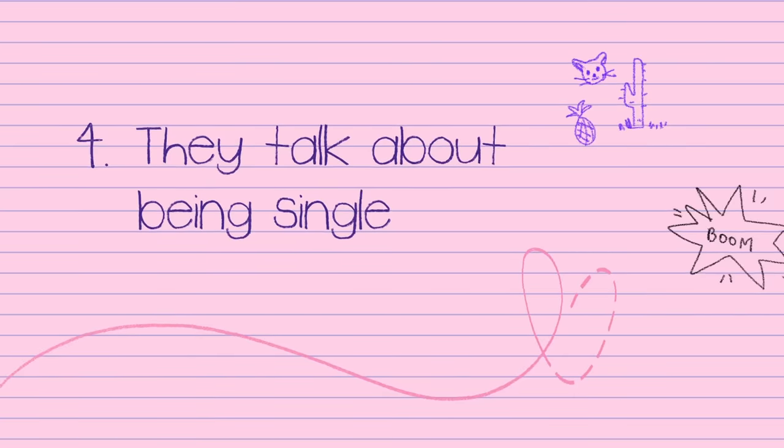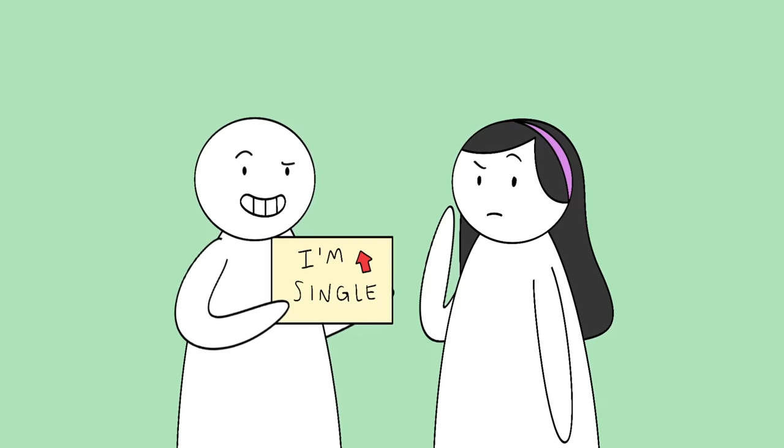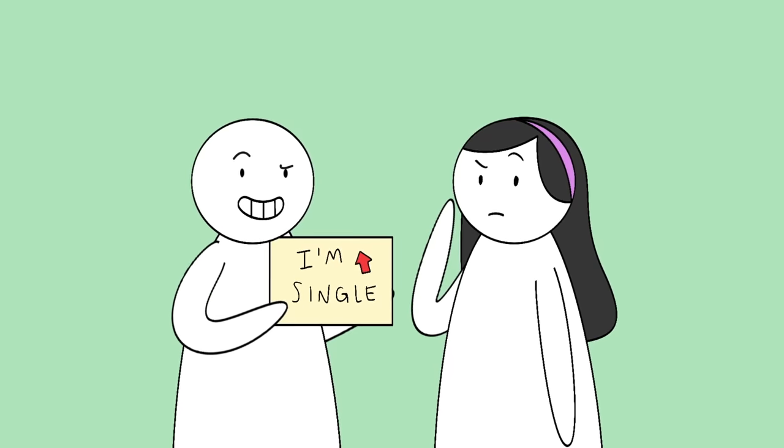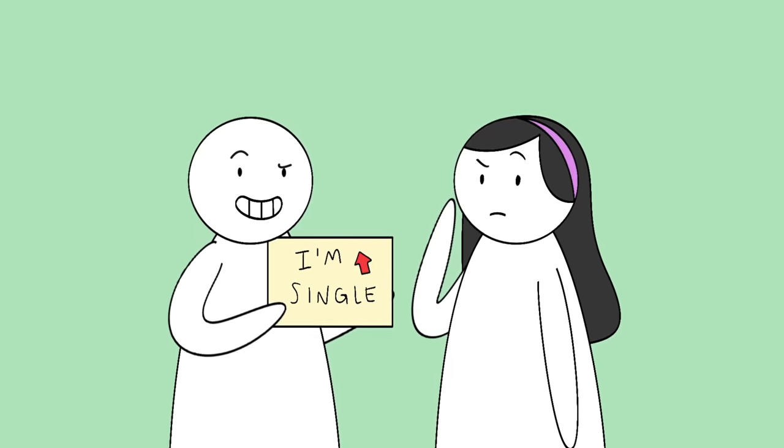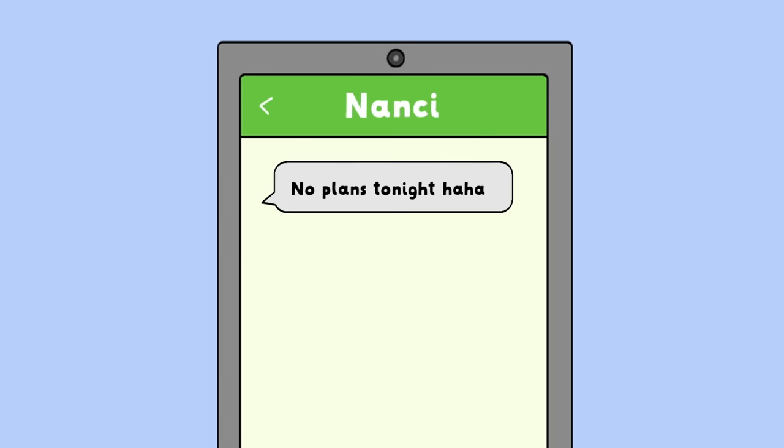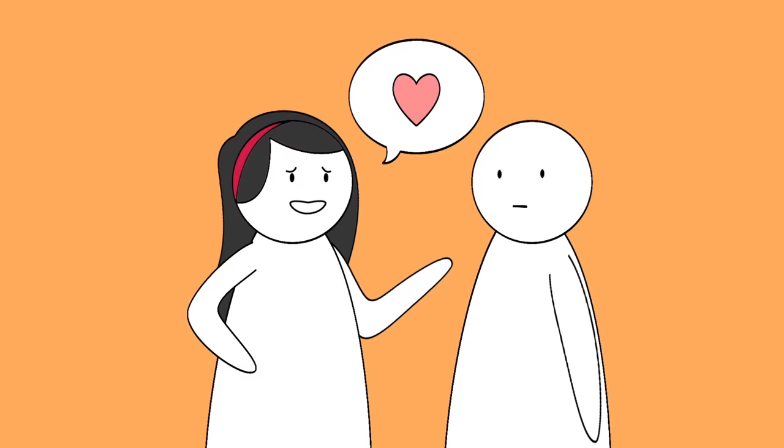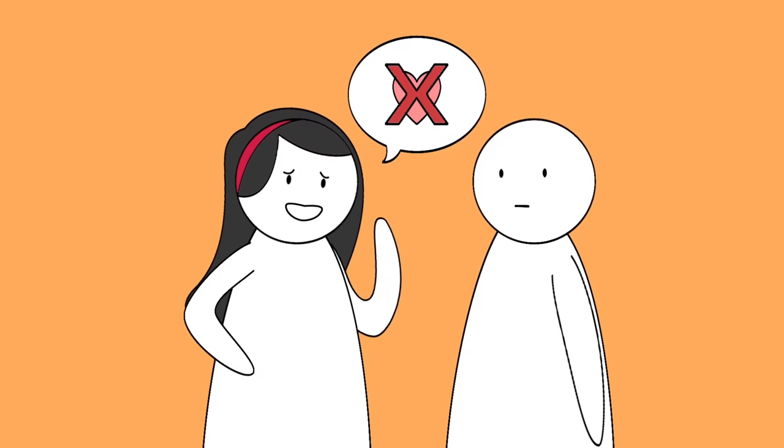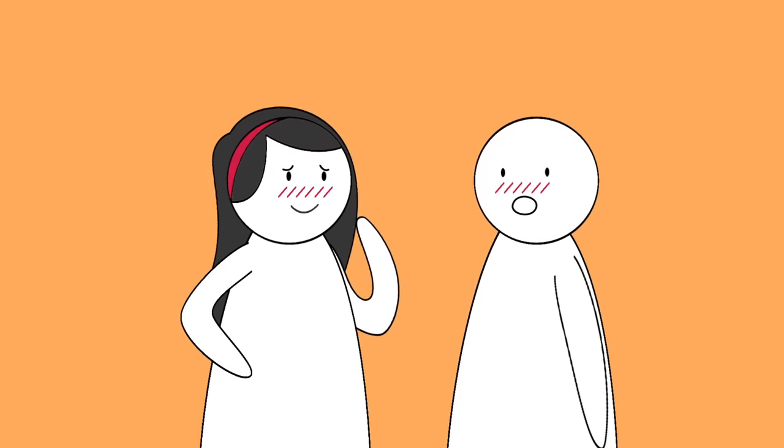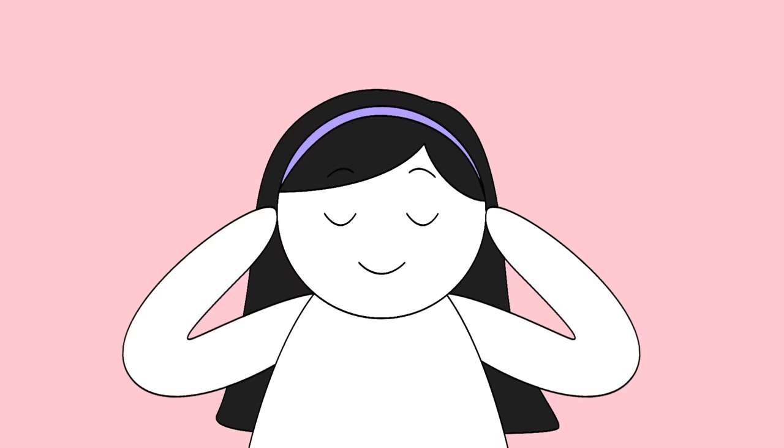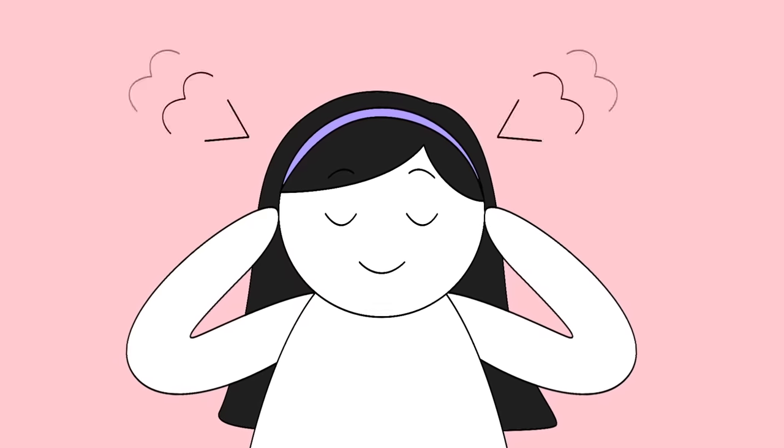4. They talk about being single. Let's stick on the topic of availability because it's such a huge factor in attraction. When someone subtly drops a hint that they're single, it's a great sign. So when someone subtly mentions that they're single, maybe it's the right time to make a move. Because who knows, they might be sending out signals of availability as a sign of attraction.